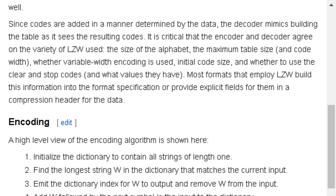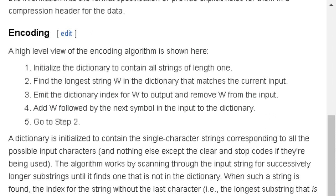Encoding: A high-level view of the encoding algorithm is shown here. 1. Initialize the dictionary to contain all strings of length 1. 2. Find the longest string W in the dictionary that matches the current input. 3. Emit the dictionary index for W to output and remove W from the input. 4. Add W followed by the next symbol in the input to the dictionary. 5. Go to step 2.